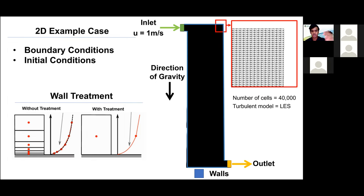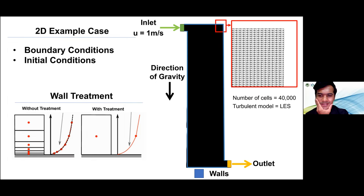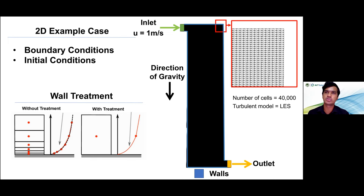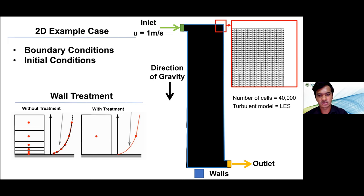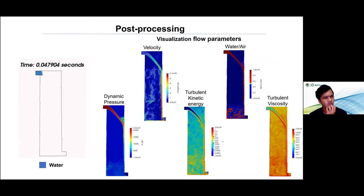Depending on the case we would have slip conditions, symmetry conditions, and empty conditions for 2D cases. We need an intuitive understanding of what these boundary conditions do, as well as the initial conditions such as velocity and direction of gravity for this particular case. For the solver we use OpenFOAM, and for post-processing and visualization we use another open source software, ParaView, which comes together with OpenFOAM.